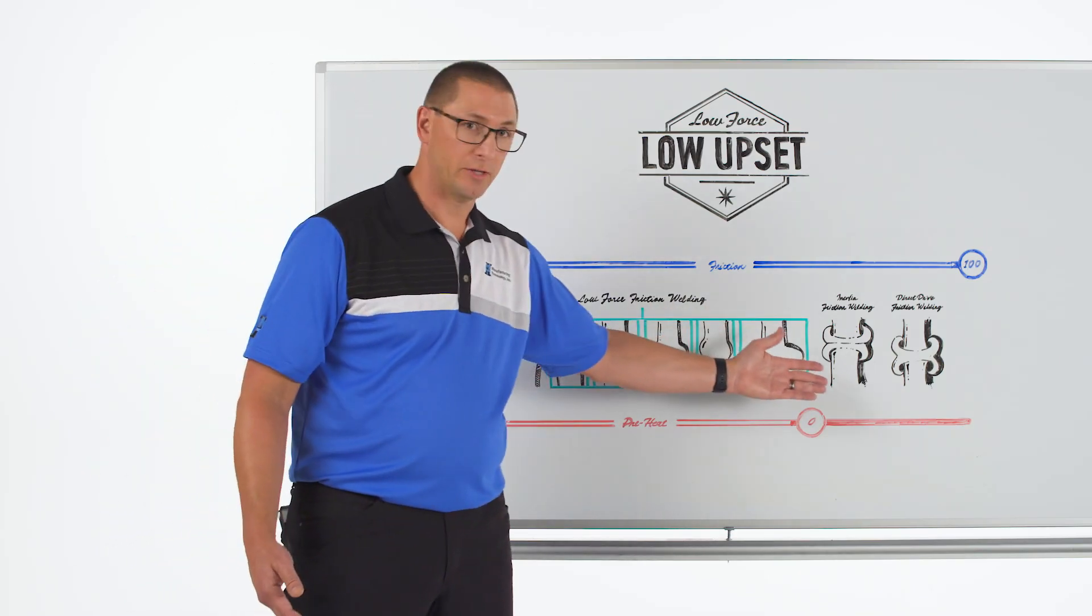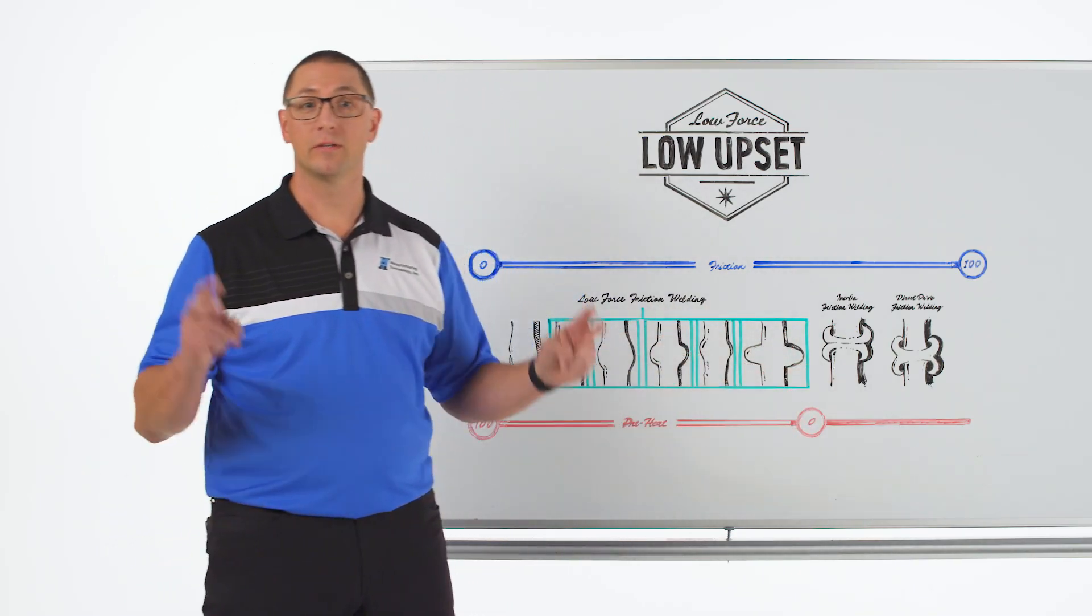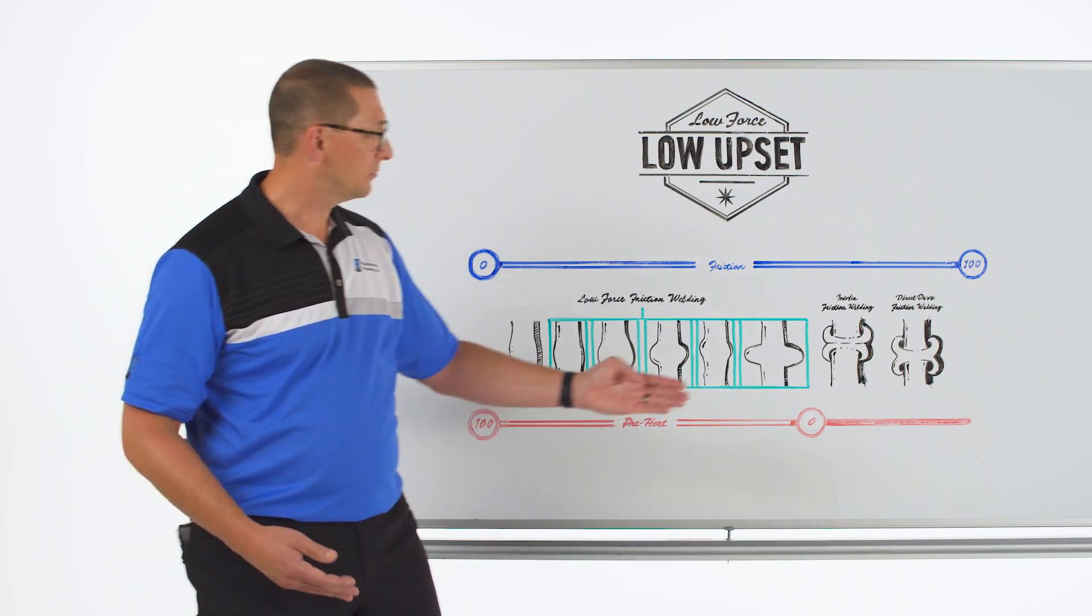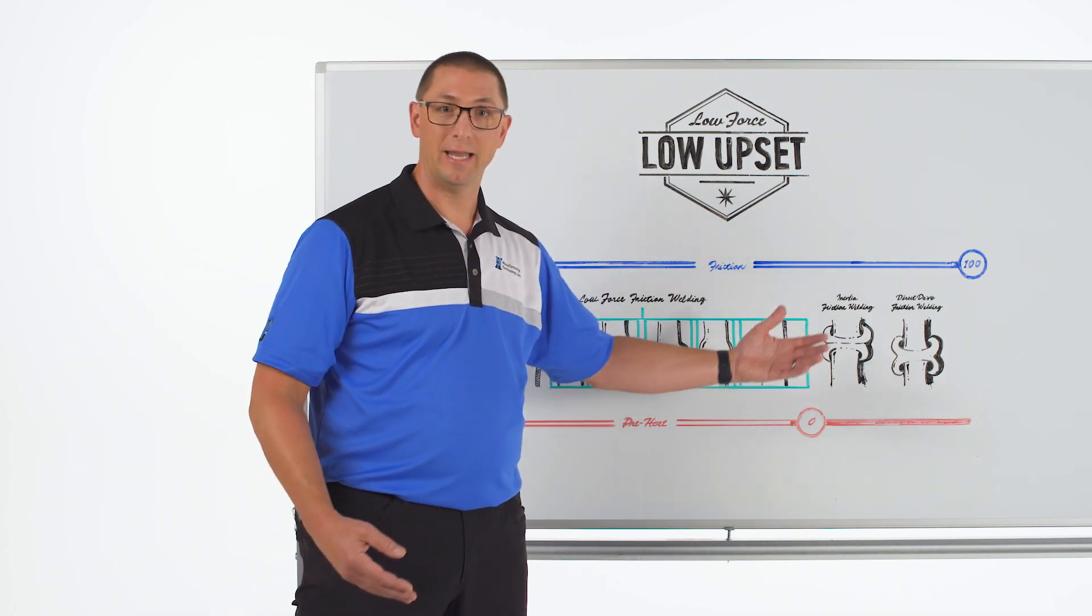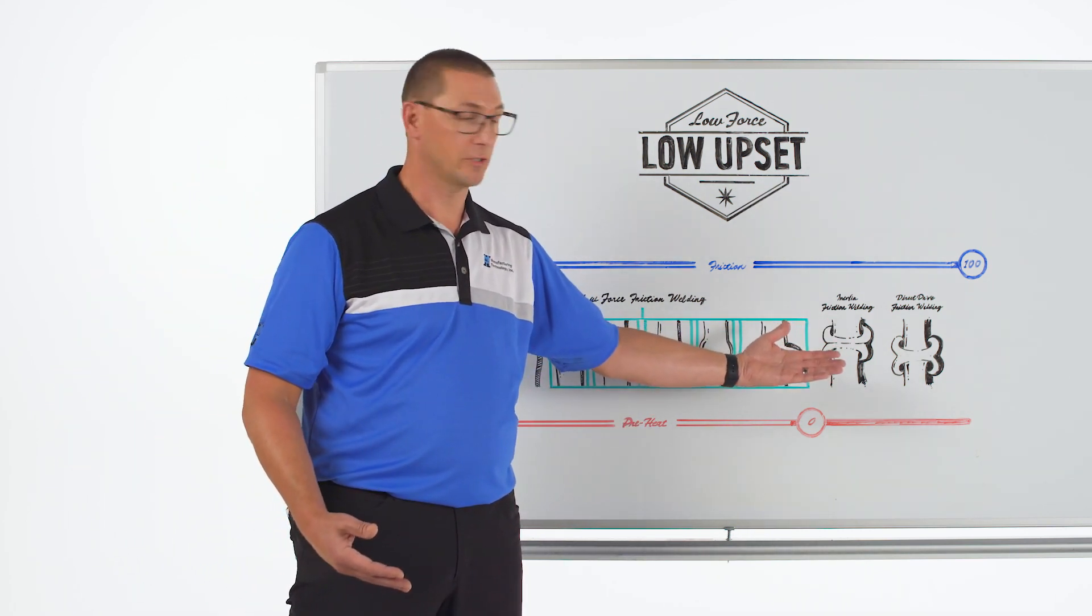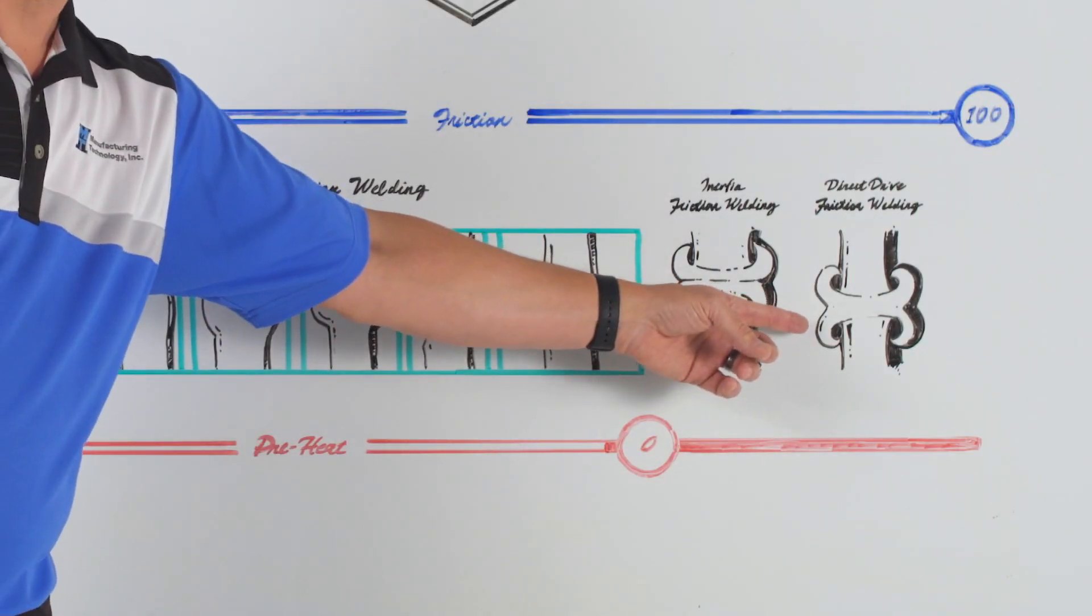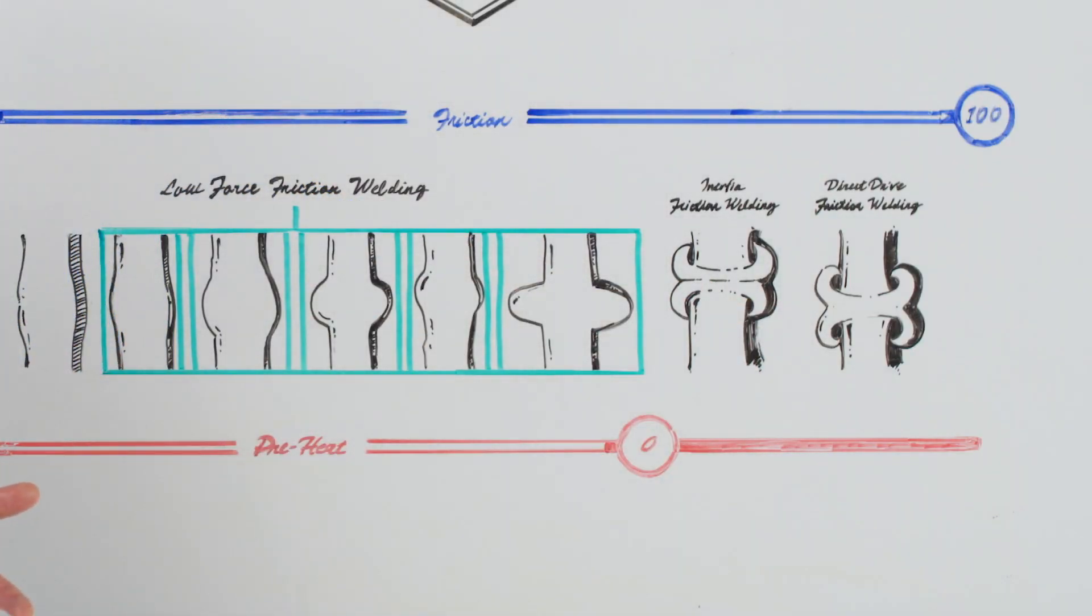One of the nice things about traditional friction welding is the weld is considered to be self-cleaning. That's because we generate so much upset that any contaminant that you might have on the surface of the weld gets moved out into the flash because of all the upset that we generate.